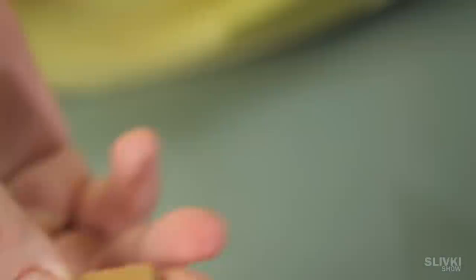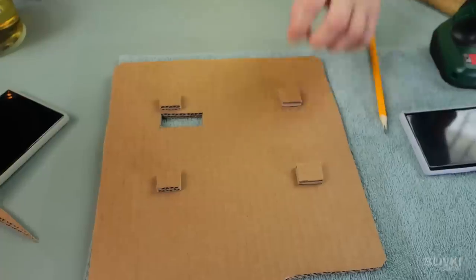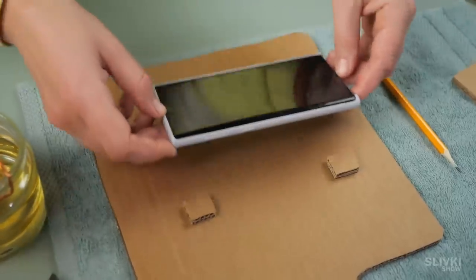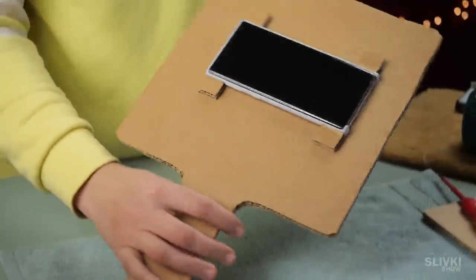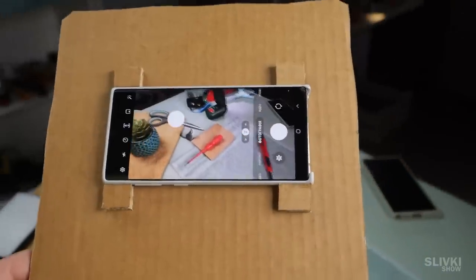Next, take 4 pieces of cardboard and then glue them in 4 places so that your smartphone sits tightly between them and does not fall out when you move. I think you already guessed what we have in mind. And you're right.